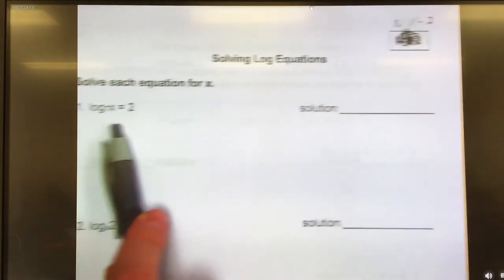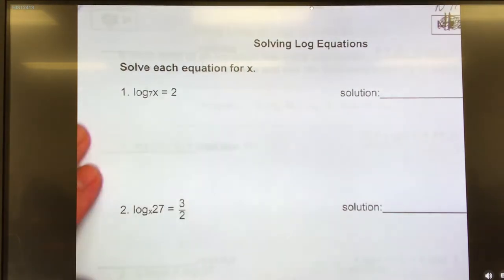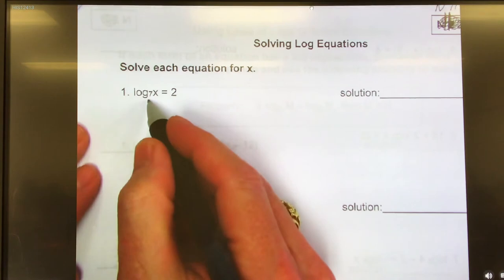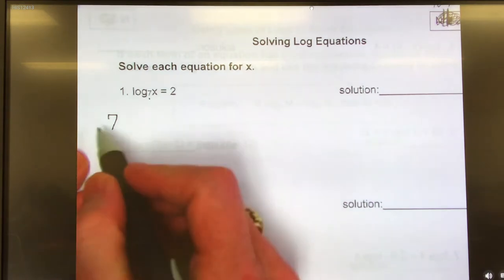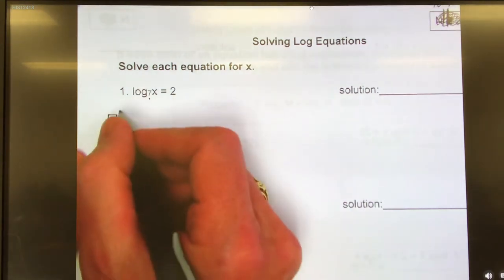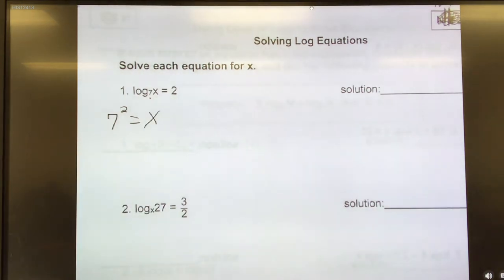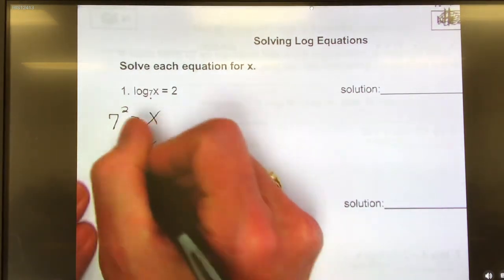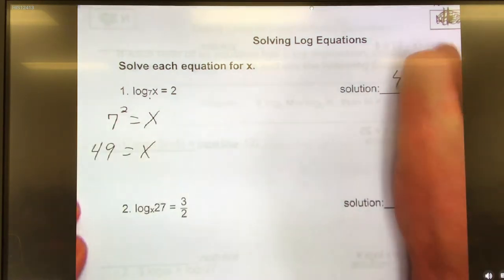All right, so it says log base 7x equals 2. We can convert this to exponential by keeping the base the base. The base is 7, so it will be the base of my exponent. So it will be 7 to the second power equals x. Now we can solve for x. x equals 7 squared, which is 49. Too easy.